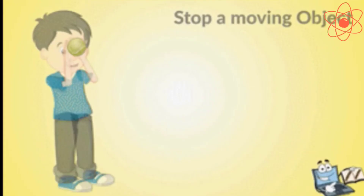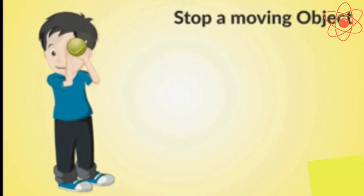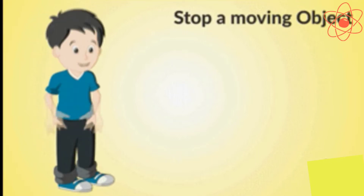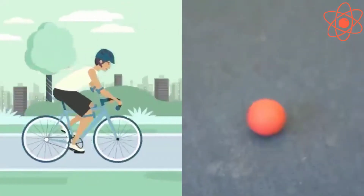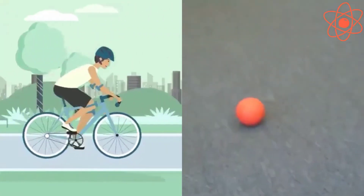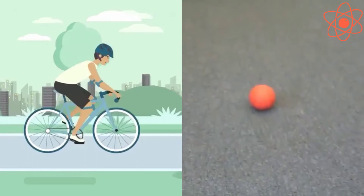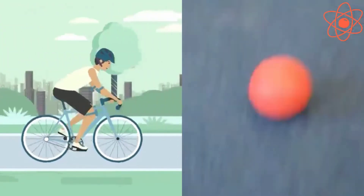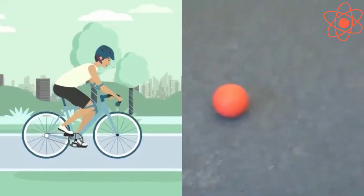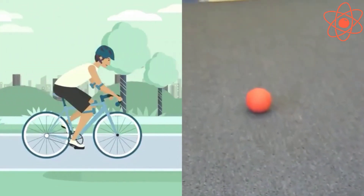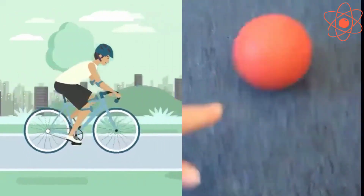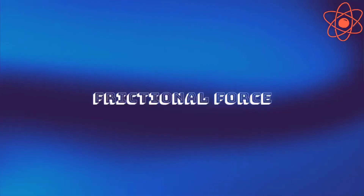You have already studied that a force can stop a moving object. This means that some kind of force acts on the ball or the bicycle that tends to stop it. This force is known as frictional force, or simply friction.